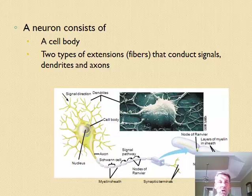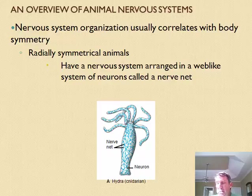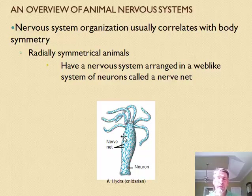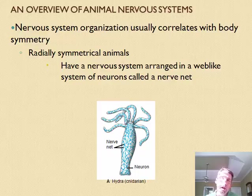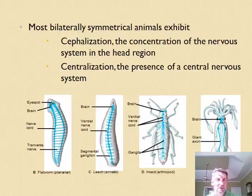Starting with invertebrates, we look at very simple nervous systems. Some invertebrates, like the hydra, have no integration center — no brain or ganglia to integrate information. It's just a scattering of neurons throughout the body. It picks up sensory information from tentacles and passes it through the body to other tentacles, but there's no integration of that information. This web-like system is called a nerve net.